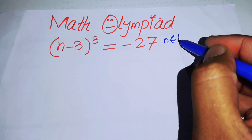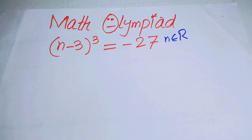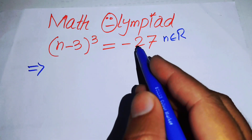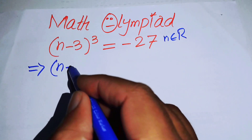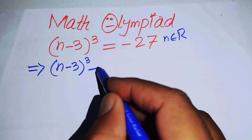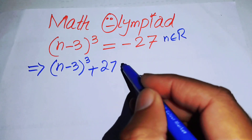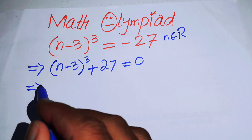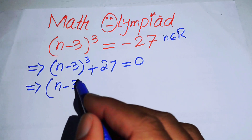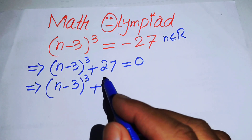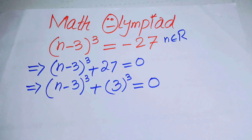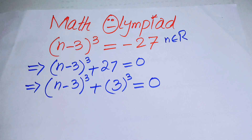The very first thing we are going to do is move minus 27 to the left hand side, and we get (n minus 3) cubed plus 27 equals 0. Now we will rewrite this equation by expressing 27 as 3 cubed, giving us (n minus 3) cubed plus 3 cubed equals 0.